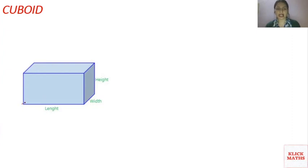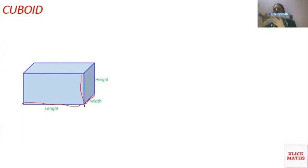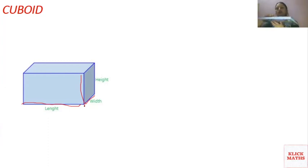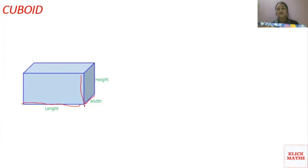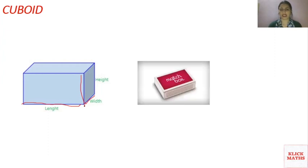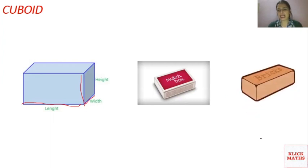The next shape is a cuboid. This is the length, this is the width, and this is the height. This notebook or register is in the shape of a cuboid — you can count one face, two, three, four, five, six faces, twelve edges, and eight vertices. Matchboxes used in daily life are also cuboid-shaped, and bricks are also in cuboid shape.